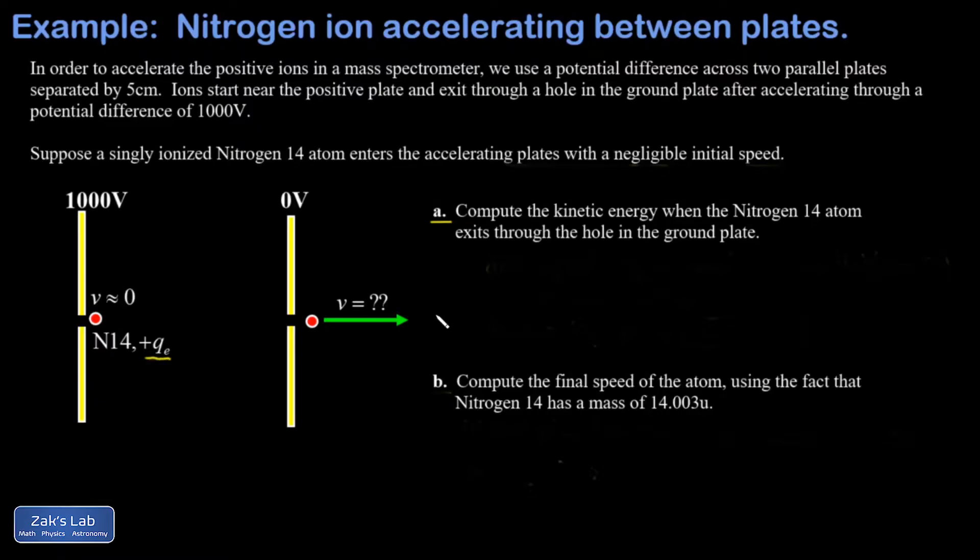The problem is broken down into two parts. The first one addresses the energy change, so we have a potential energy decrease for this nitrogen atom as it goes from high to low potential. That change in potential energy is given by the usual formula ΔP equals q·ΔV.